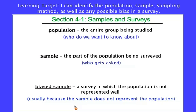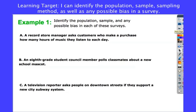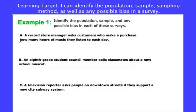When we try to identify bias in a sample, we want to first identify who's getting asked and who do we want to know about, then figure out if the population is being represented well. Here are three examples. A record store manager asks customers who make a purchase how many hours of music they listen to each day. The sample — who gets asked — is customers who make a purchase.